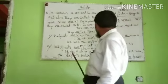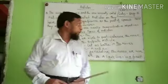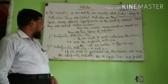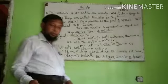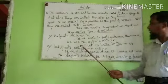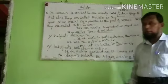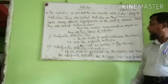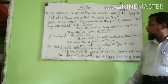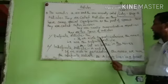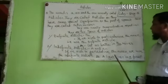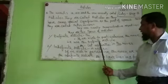Articles are real demonstrative adjectives. There are two types of articles. The first type is the definite article. If we wish to particularize the noun, we use the definite article.